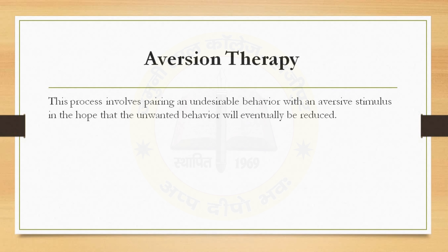Aversion therapy is also a behavior therapy. In this process, it involves pairing an undesirable behavior with an aversive stimulus in the hope that the unwanted behavior will eventually be reduced. For example, someone suffering from alcoholism might take Disulfiram, a drug which causes severe symptoms such as headache, nausea, anxiety, and vomiting when combined with alcohol. Most people who take Disulfiram will vomit after a drink of alcohol. This, in turn, is thought to create a deterrent to drinking.